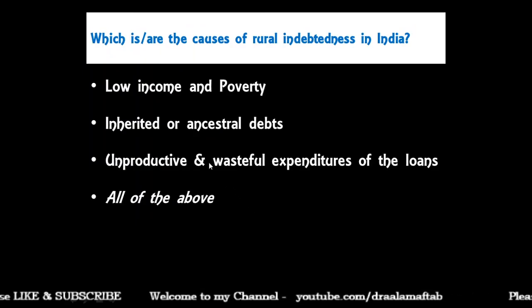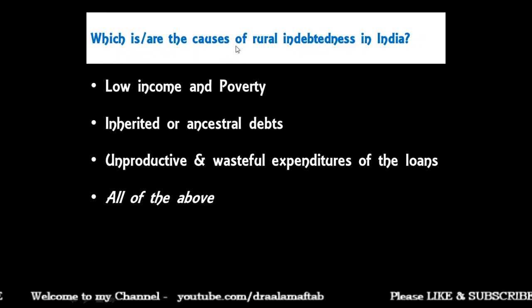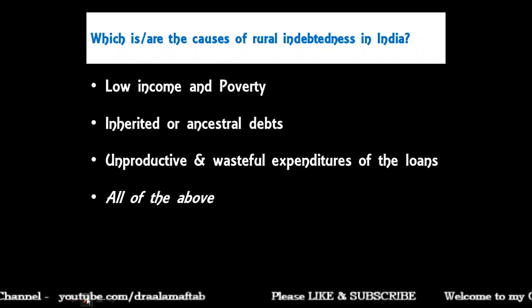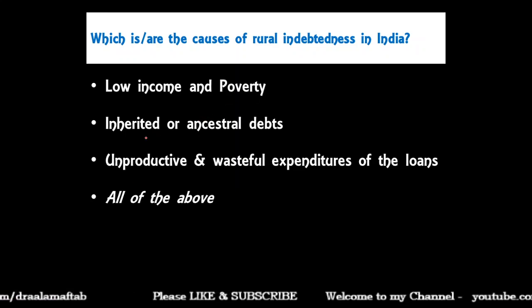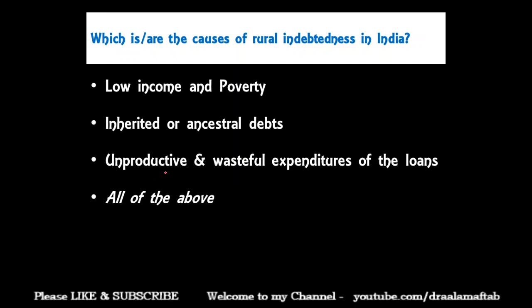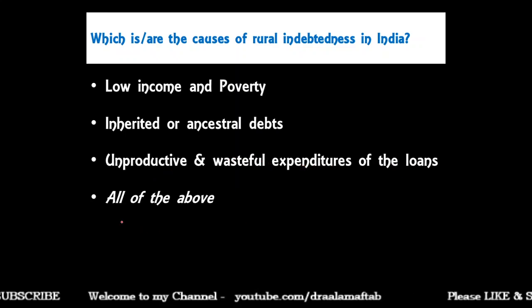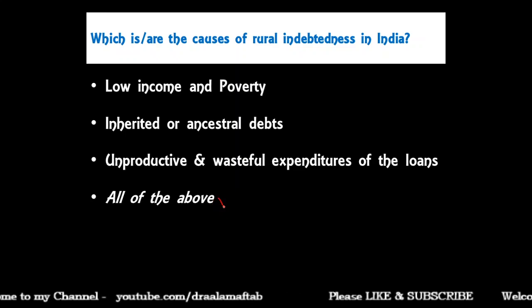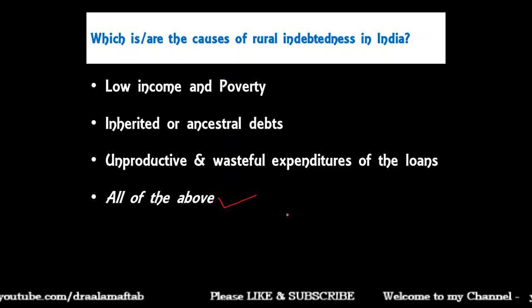What are the causes of rural indebtedness in India — low income and poverty, inherited or ancestral debts, unproductive and wasteful expenditure of loans, or all of the above? The correct answer is all of the above — all three are causes of rural indebtedness in India.